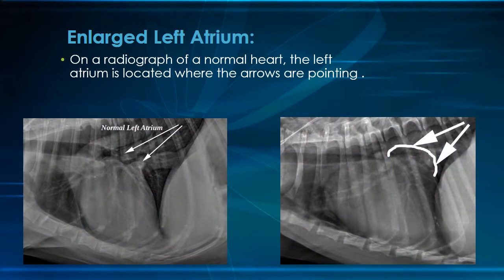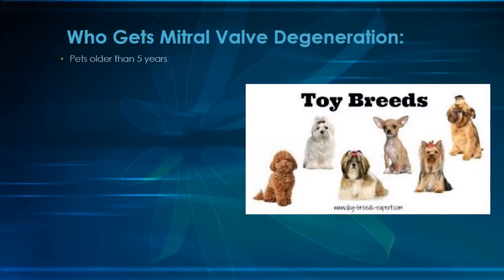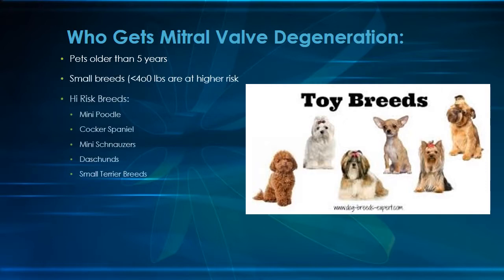Here we have two radiographs of the chest. The image on the left shows a normal-sized heart with a normal-sized left atrium. The image on the right shows a heart with a very large left atrium, as depicted by the arrows and the outline. Mitral valve degeneration generally affects small breed dogs who are over five years of age. The King Charles Spaniel has a very high incidence of mitral degeneration and may be affected as early as two to three years of age.